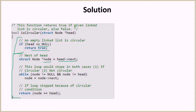Otherwise, we store the value of head's next pointer in a variable called node. This is the variable we will use to traverse the linked list. We run a while loop where we keep moving the node pointer to the next node. The loop breaks in two conditions: either node becomes null, meaning it is not circular, or node becomes equal to head, meaning the list is circular and the pointer has traversed the whole linked list and returned to head.